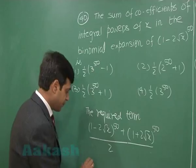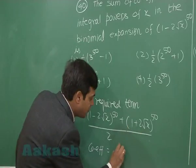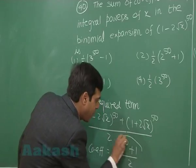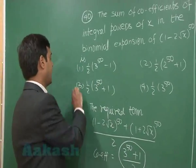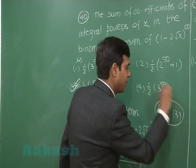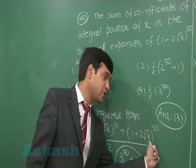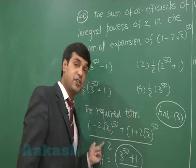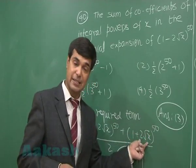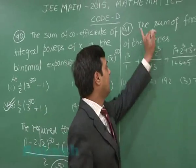So the coefficients we obtain by substituting x = 1. x = 1 gives me (3^50 + 1) / 2, the direct result to this question. That is option number 3, so correct answer is option 3. So this is clear what we did. We simply have taken another expression (1 + 2√x)^50. We expanded the two. On addition we find double of the even powers of 2√x, hence the result is obtained by dividing by 2.